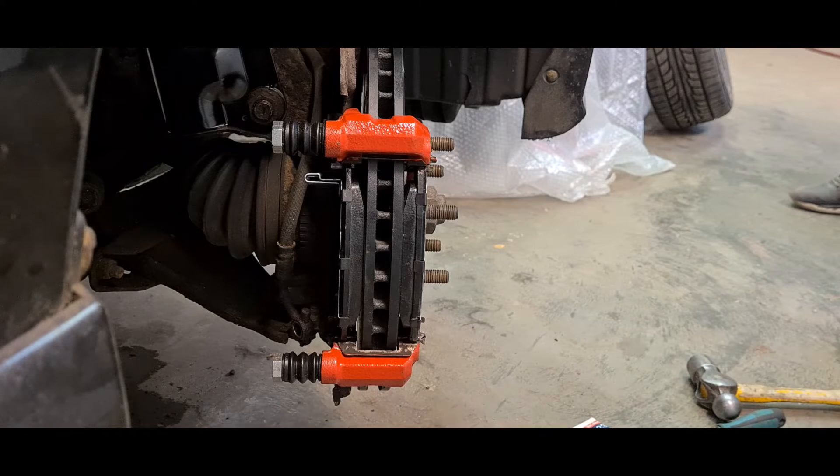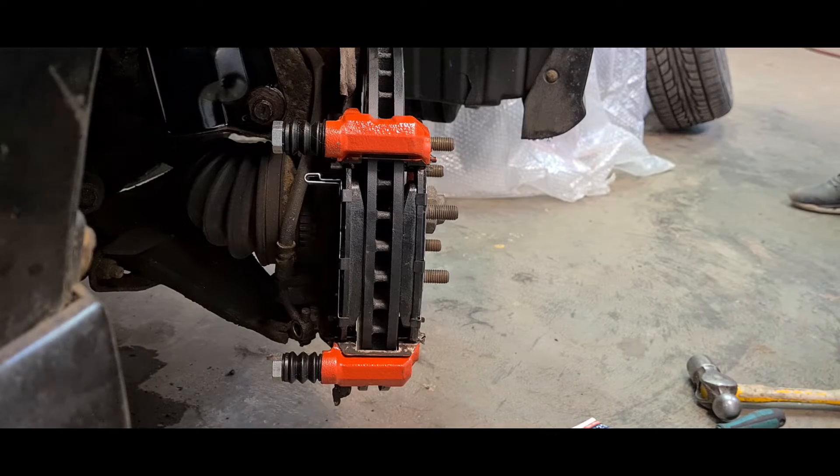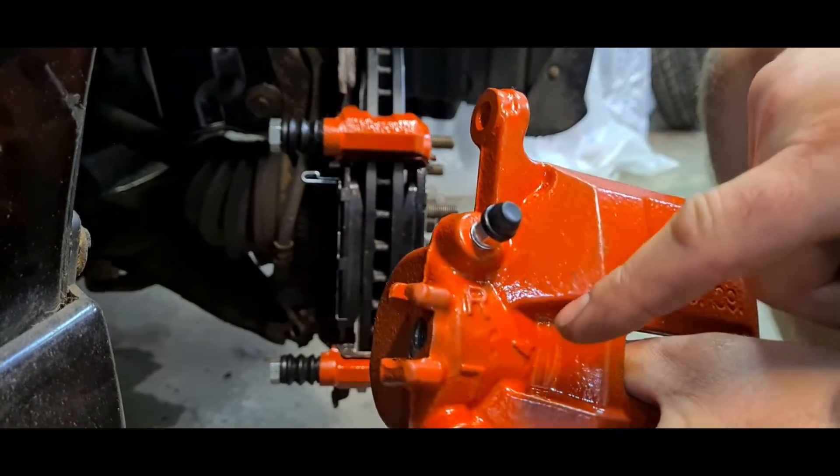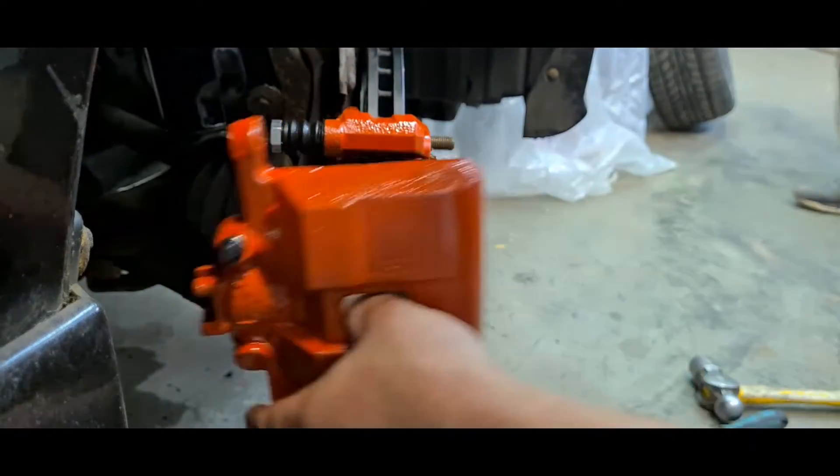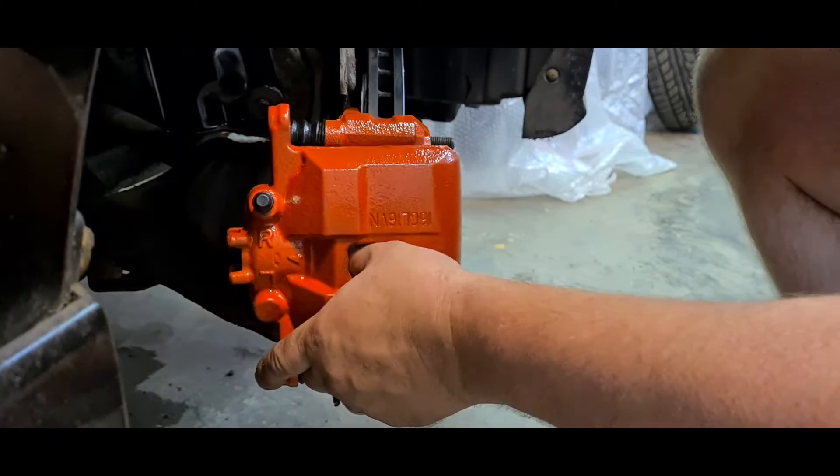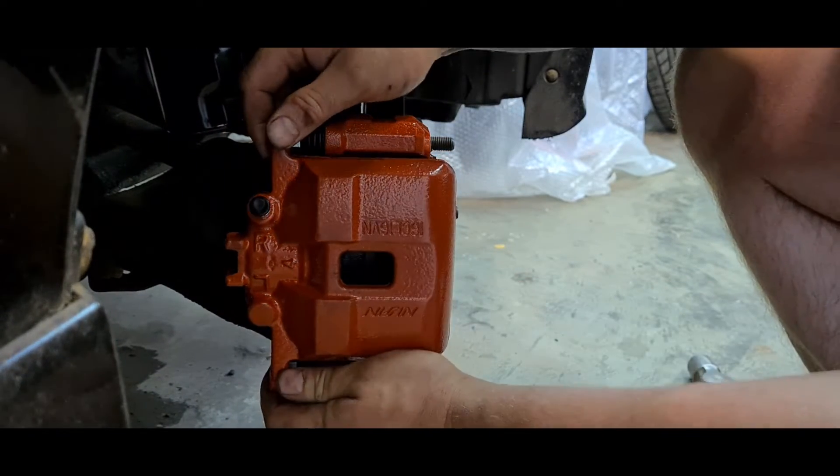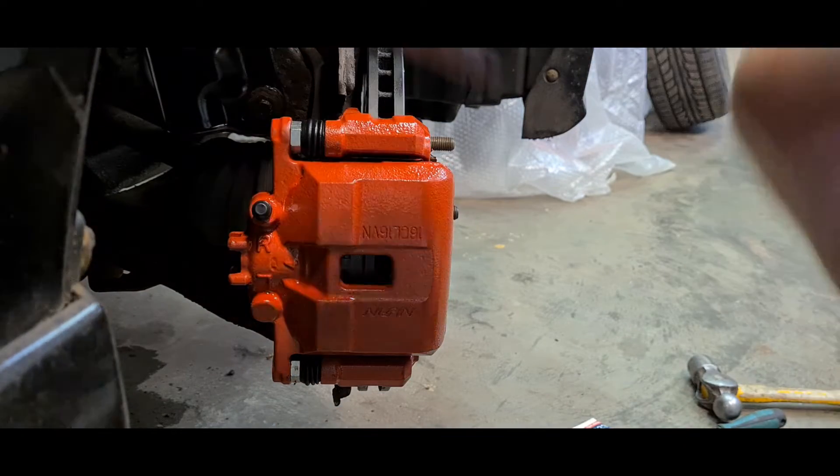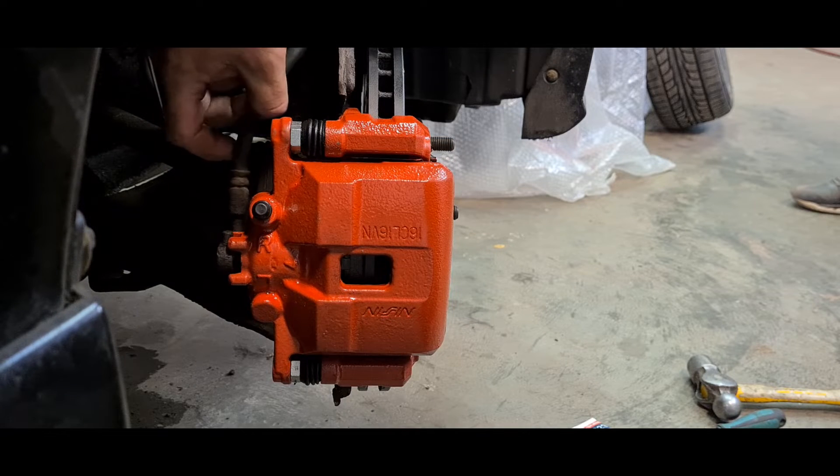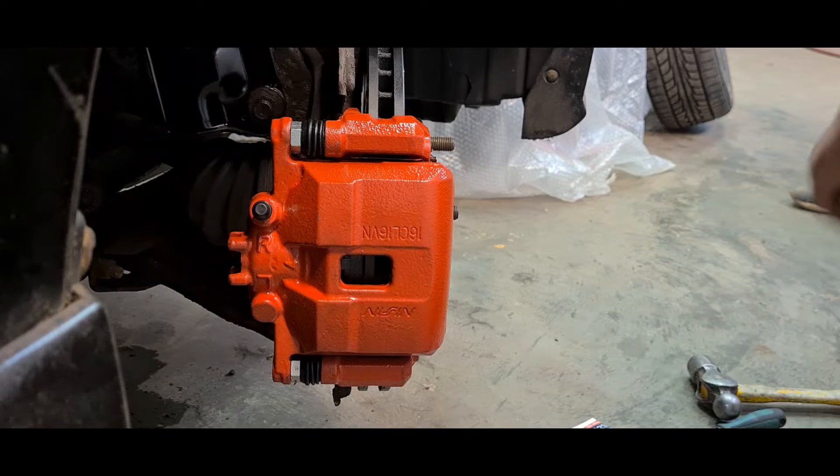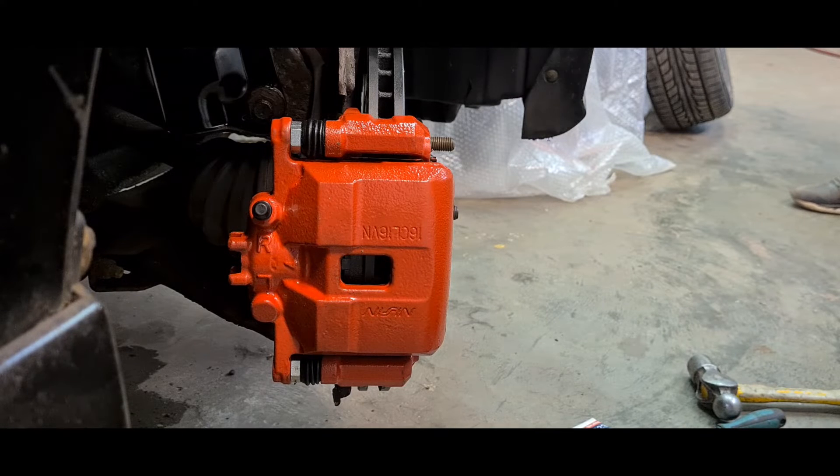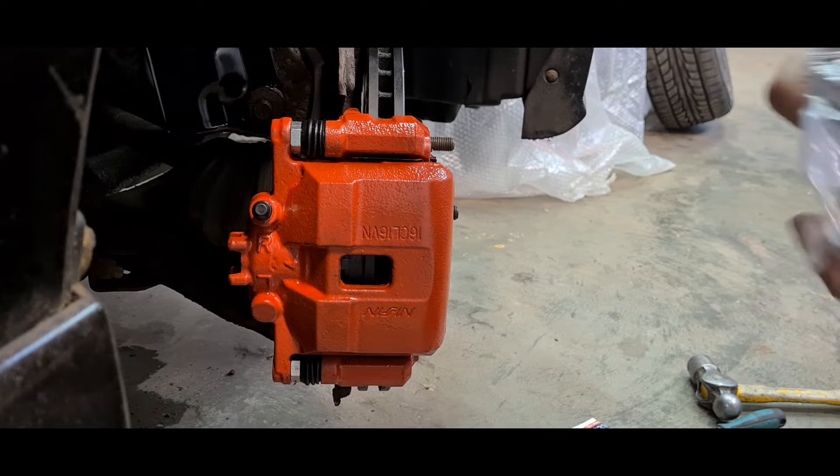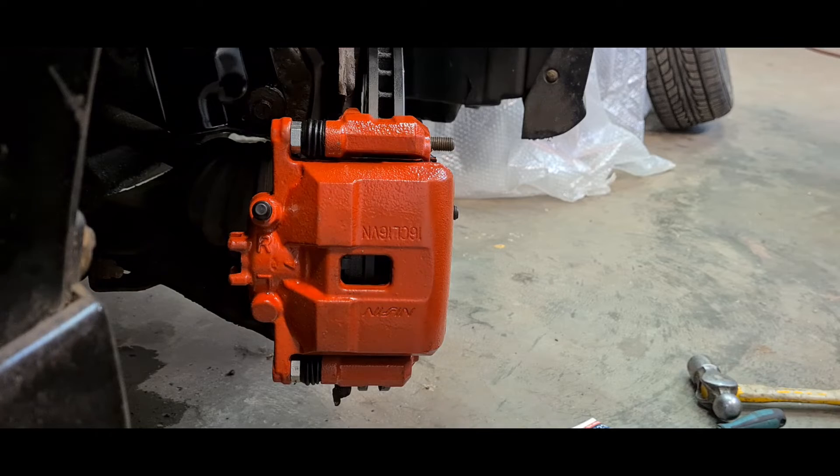Obviously, you want to make sure you get the right caliper on the right side, because they're handed right and left. Obviously all you want to remember is the bleed nipple needs to go at the top. Pistons are already pushed right the way in, so we don't have to worry about that. Drop them in, and that's the caliper on. Two bolts in the back. Fasten the brake pipe up. New hardware from the kit.